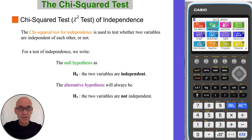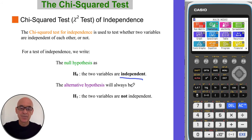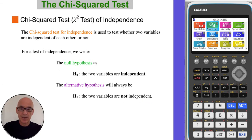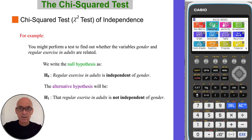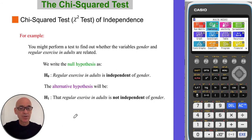The chi-squared test for independence is used to test whether two variables are independent of each other or not. The null hypothesis will be that the two variables are independent, and the alternative hypothesis will be that the two variables are not independent — and those always remain the same for a test of independence. For example, we might perform a test to find out whether the variables gender and regular exercise in adults are related. We would write the null hypothesis that regular exercise in adults is independent of gender, and the alternative hypothesis would be that regular exercise in adults is not independent of gender.